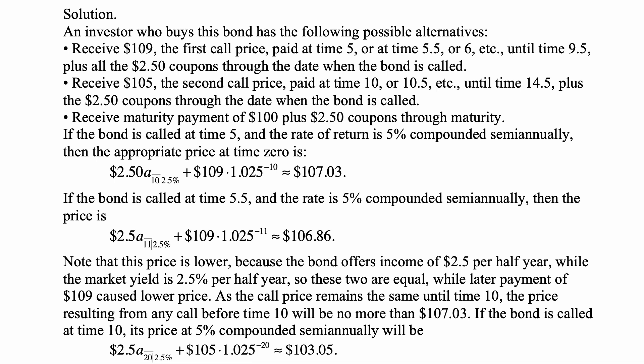Or receive a maturity payment of 100 plus $2.50 coupons through maturity. If the bond is called at time 5 and the rate of return is 5% compounded semi-annually, then the appropriate price at time 0 is $2.50 paid as a coupon over 10 periods at 2.5% — 10 periods, that's 5 years worth of half-year periods — plus 109 times 1.025 to a negative 10, which is approximately $107.03.